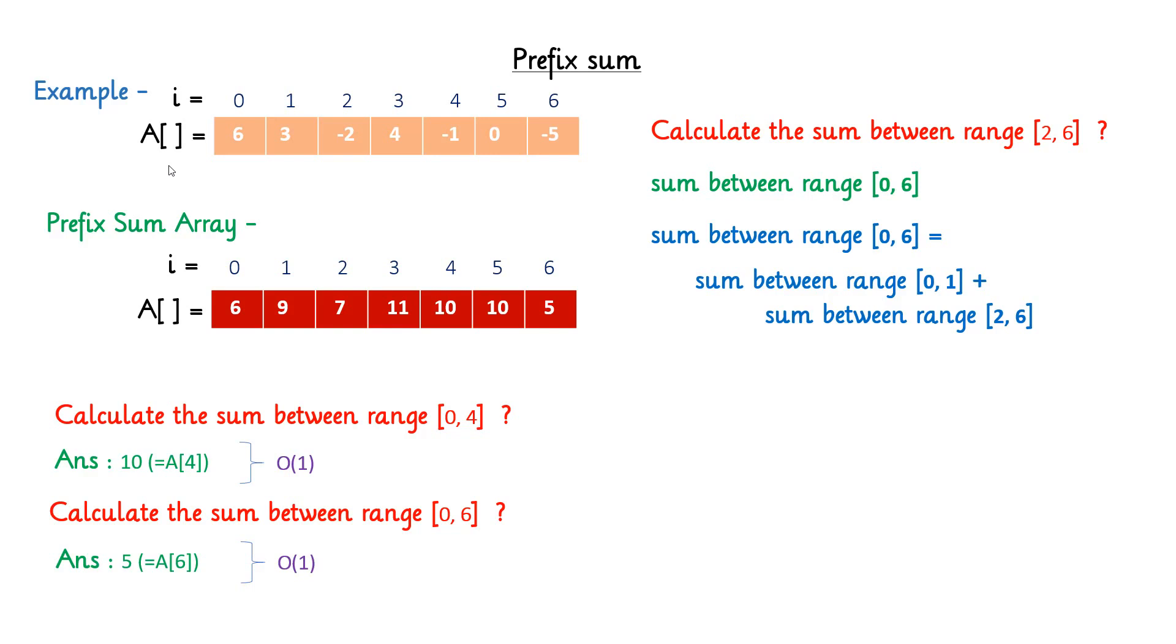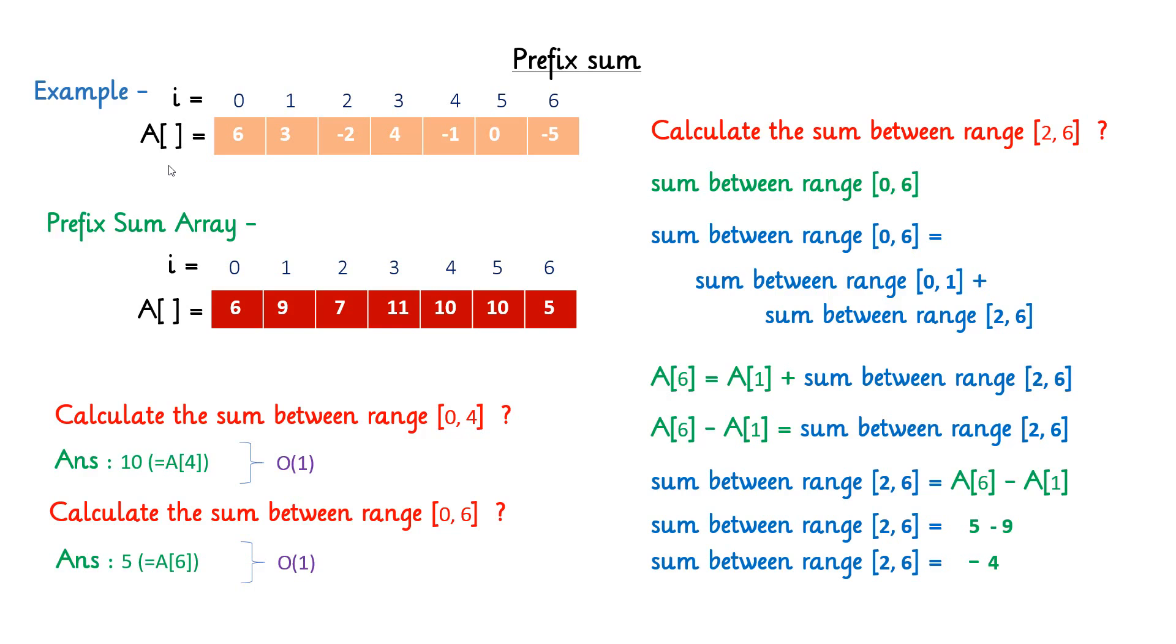Sum between range from 0 to 6 can be calculated from A[6] and the sum between range from 0 to 1 can be calculated from A[1]. So after replacing the value, we can say the sum between range from 2 to 6 is minus 4 and the same steps you can visualize here.